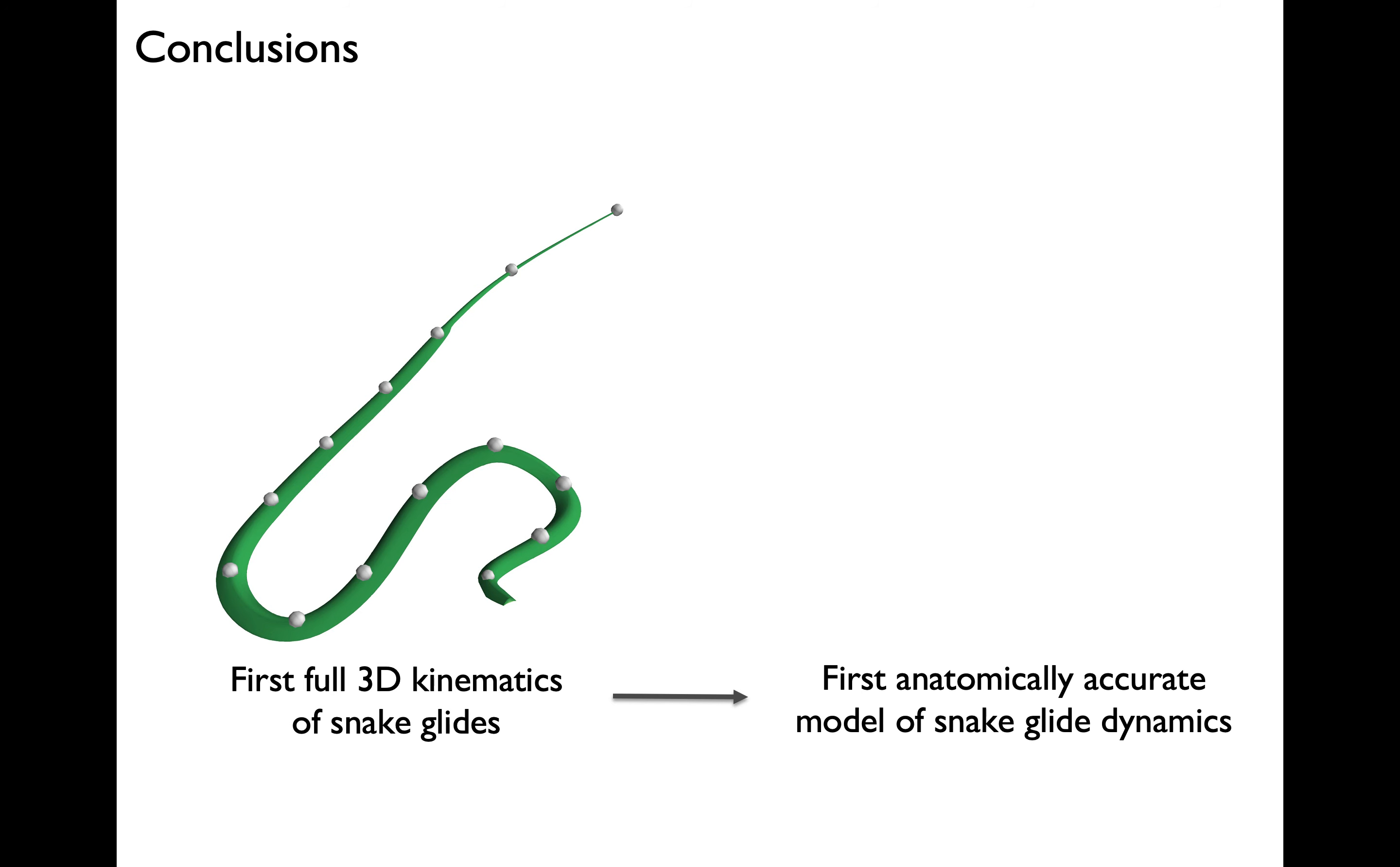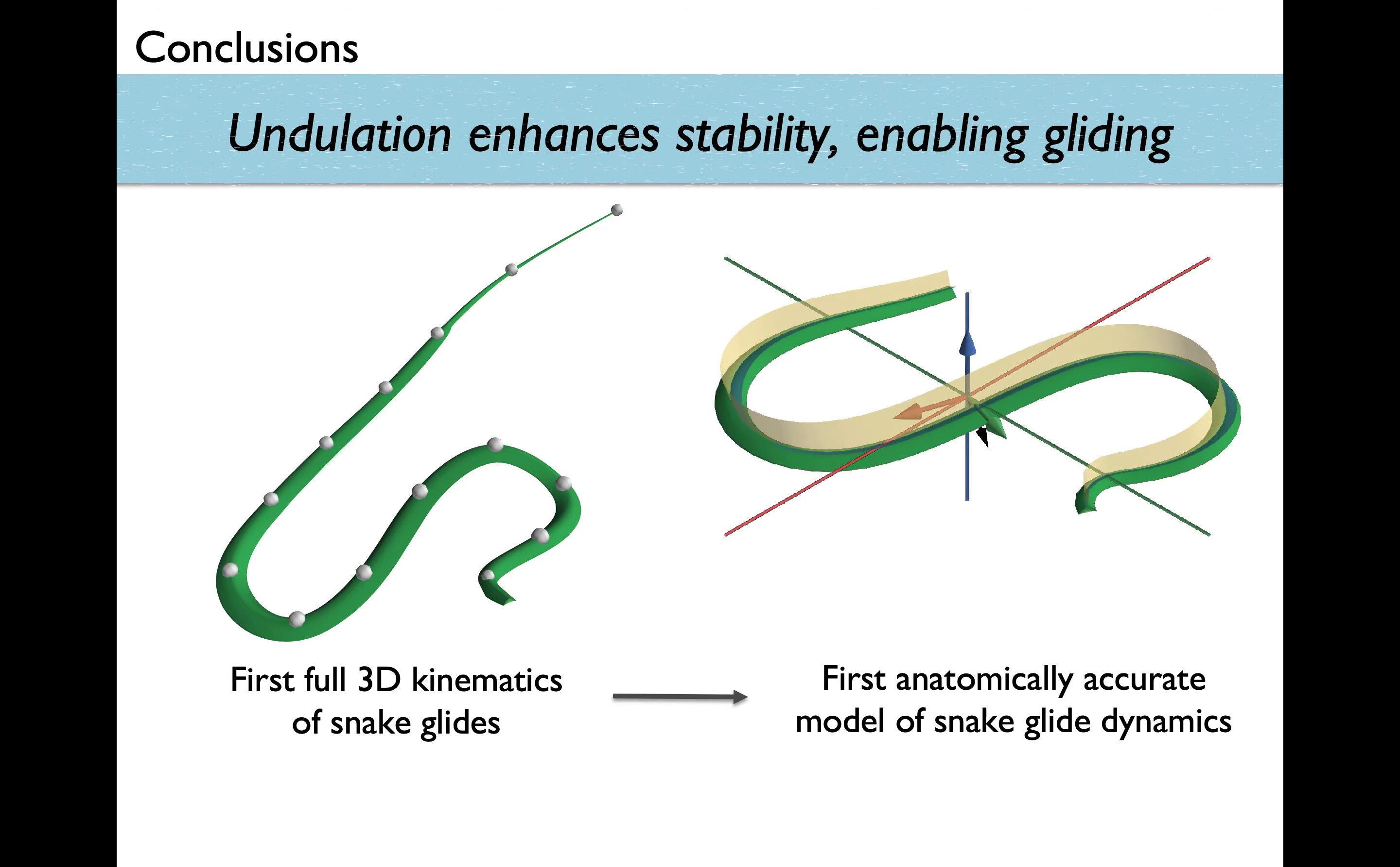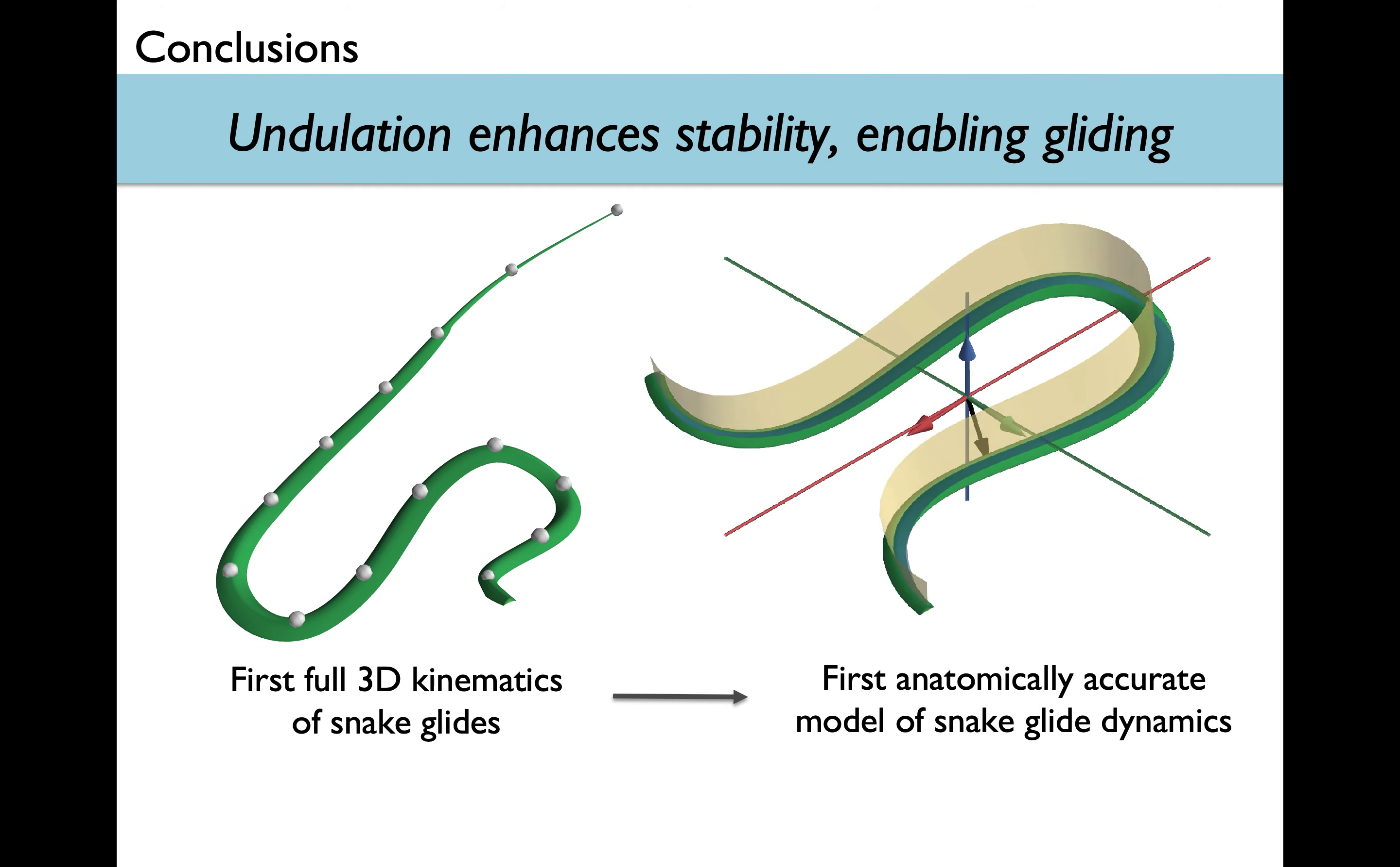What we've presented today is the first full 3D kinematics analysis of flying snakes. We then use these kinematics to develop the first anatomically accurate model of snake flight. From our original question of what is the mechanical role of undulation on gliding, our analysis indicates that undulation enhances stability, enabling gliding.